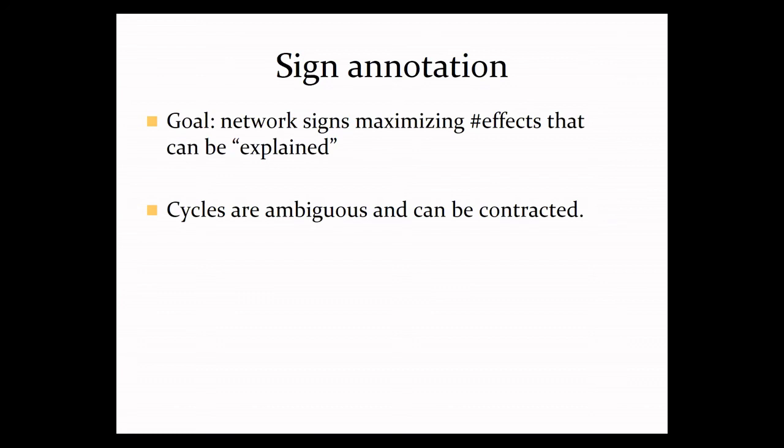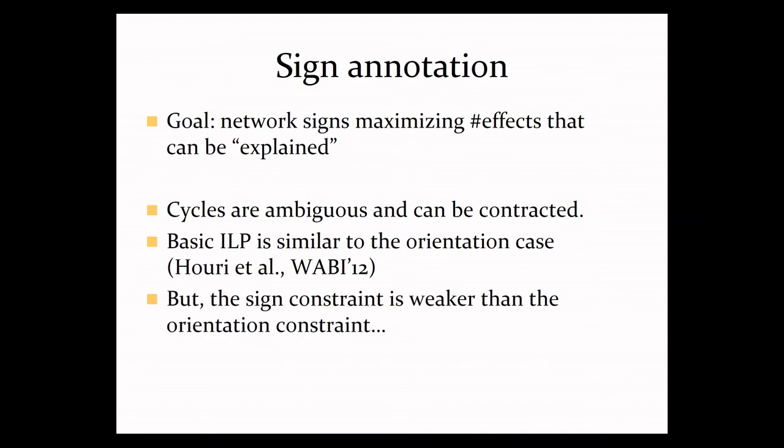And it turns out that this problem is very, very similar to the orientation problem. So again, cycles are ambiguous and can be contracted. And again, because of this observation, we can write at least the basic integer linear program that is very similar to what we saw in the orientation case. However, there is one crucial difference between the two problems. And this difference is that the sign constraint is weaker in the sense that if you have a path, it's enough for us to flip the sign of one edge and we flip the sign of the entire path. While if we have a path and we reverse the direction of one edge, it will not reverse the direction of the entire path unless this path consists of a single edge. So this means that in order to predict signs, we need more restrictive models than what we use for orientation.